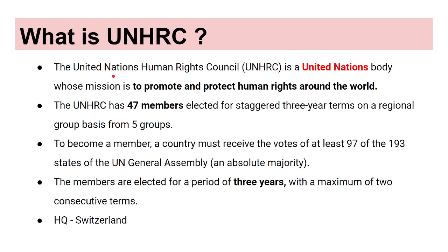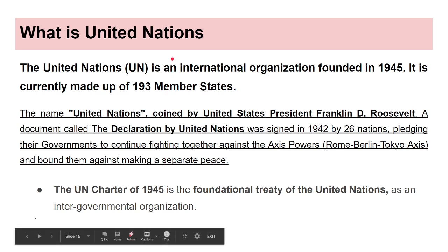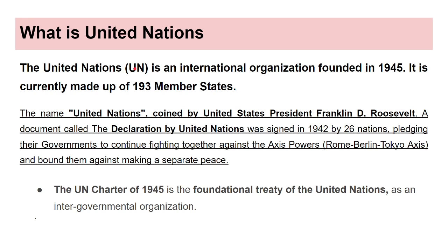The United Nations Human Rights Council is a body of the United Nations whose mission is to promote and protect human rights around the world. The UNHRC has 47 members elected for staggered three-year terms on a regional group basis from five groups. To become a member, a country must receive the votes of at least 97 of the 193 states of the UN General Assembly — an absolute majority. Members serve a maximum of two consecutive terms. The headquarters of the UNHRC is in Geneva, Switzerland.